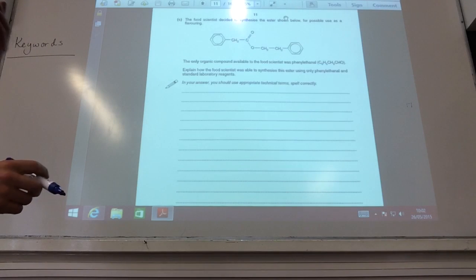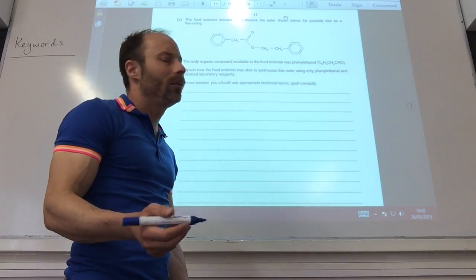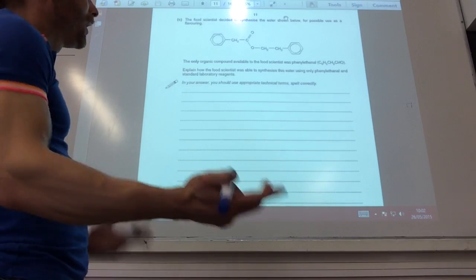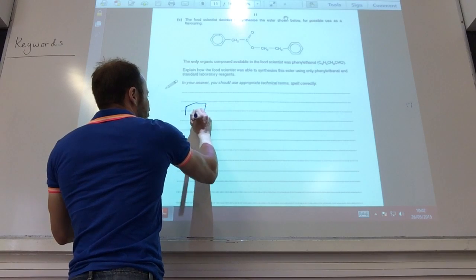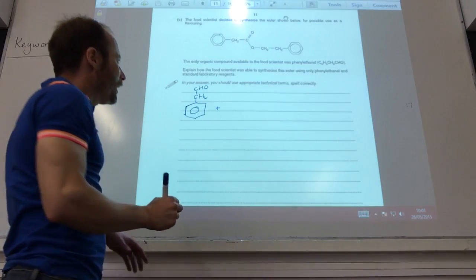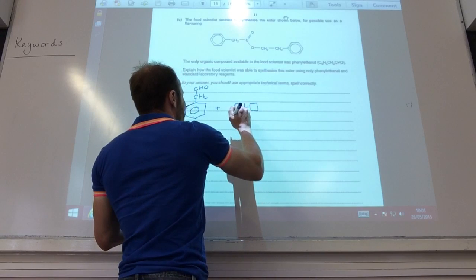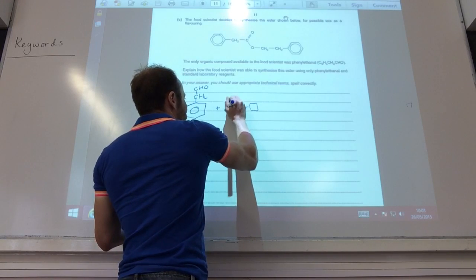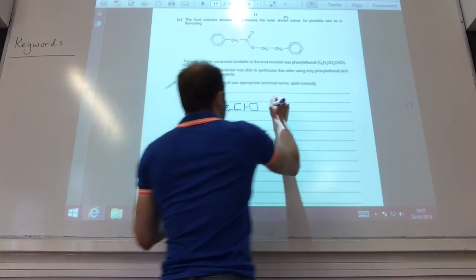Quite an interesting one now. I've got to make this ester, and they've only given me phenylethanol to work with. How can I go? Well, as you know, to make an ester I need a carboxylic acid and I need an alcohol, and I haven't got you at the moment. But I have got an aldehyde, and I can make both from an aldehyde. So if I start with phenylethanol, and if I reduce this, square bracket H, and I think I need two H, like so.